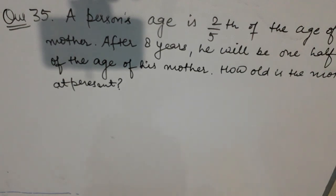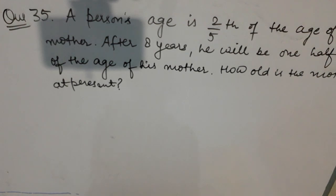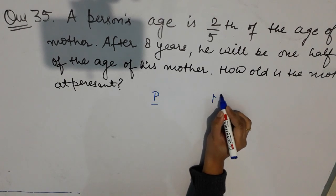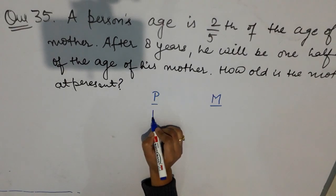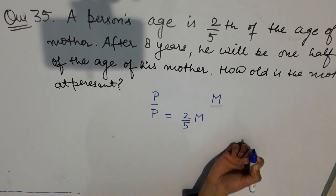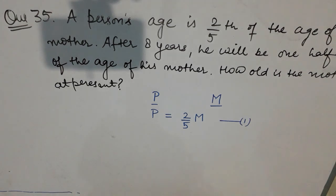Now we have question number 35: a person's age is 2/5 of the age of his mother; after 8 years he will be one half of the age of his mother. How old is the mother at present? For age-related problems, change all the language into mathematical terms. Let P be the person's age and M be the mother's age. The first statement gives P = (2/5)M.